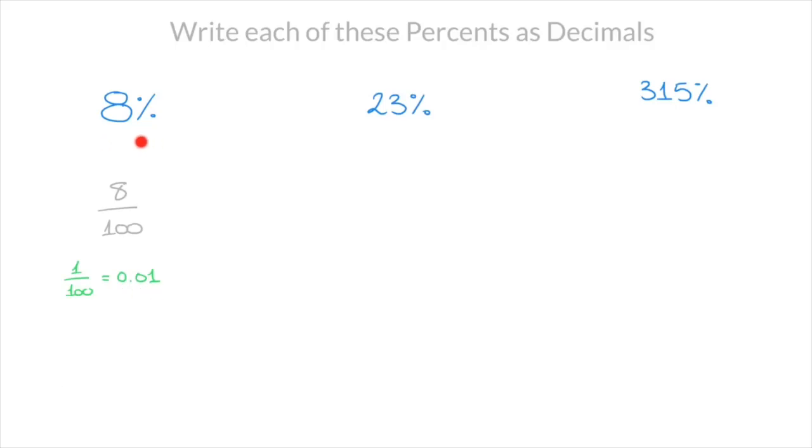So to write 8% or eight hundredths as a decimal, all we need to do is multiply 0.01 by 8. And that would be 0.08. And that's the answer. 8% is equal to 0.08.